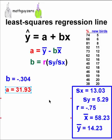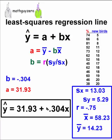The rest is just plugging in the values back into the original formula. And we get the predicted y is 31.93 plus a negative 0.304x. That is your least squares regression line.